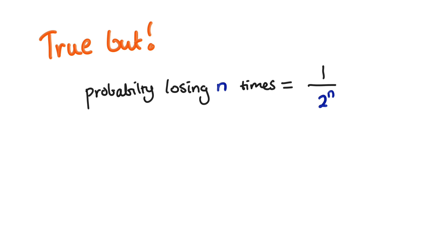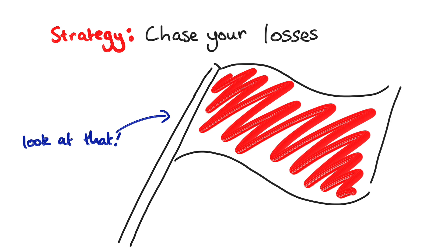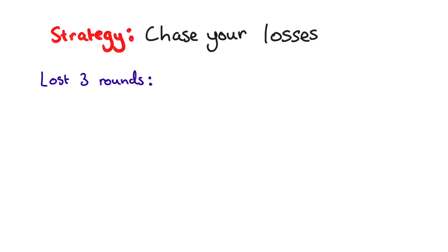The idea behind this strategy is to chase your losses, you know that thing that people tell you you should never do. If you've lost 3 rounds, then so far you've lost 2 plus 4 plus 8, which equals 14. So you bet 2 higher than your total loss.